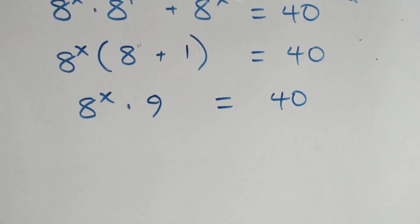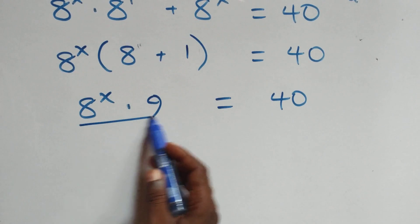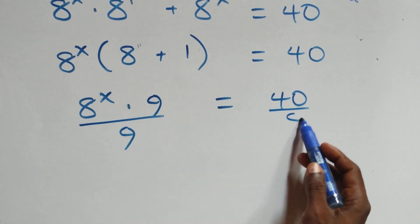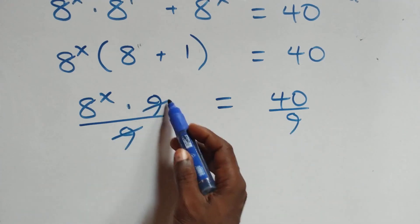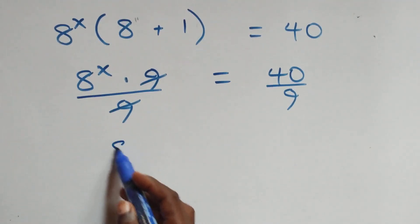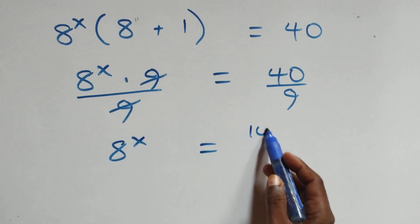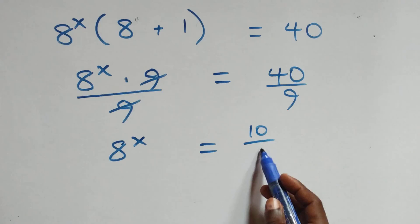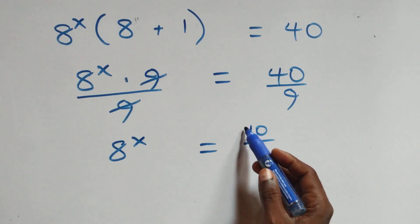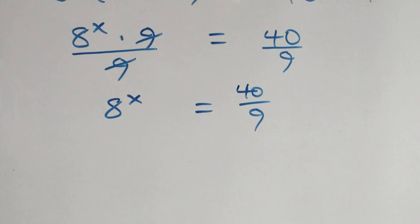Next step: divide both sides by 9 — divide this side by 9, also divide this side by 9. Here 9 cancels each other. We have 8 raised to power x equals 10 over 9 — sorry, this is 40 — so 40 over 9.